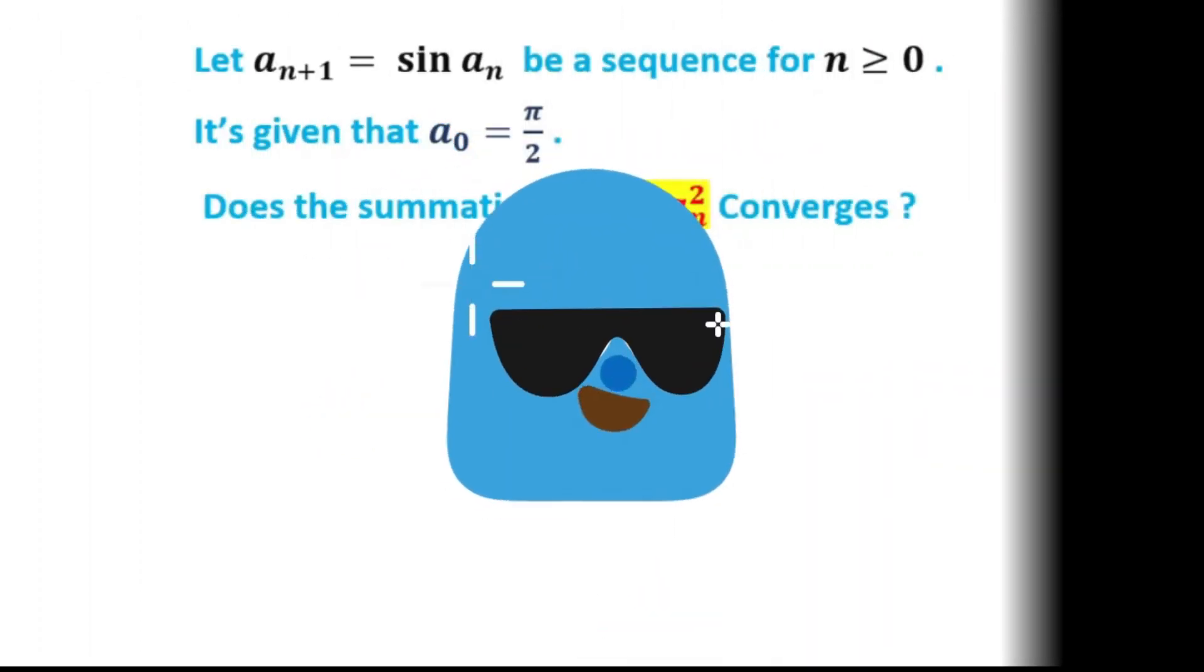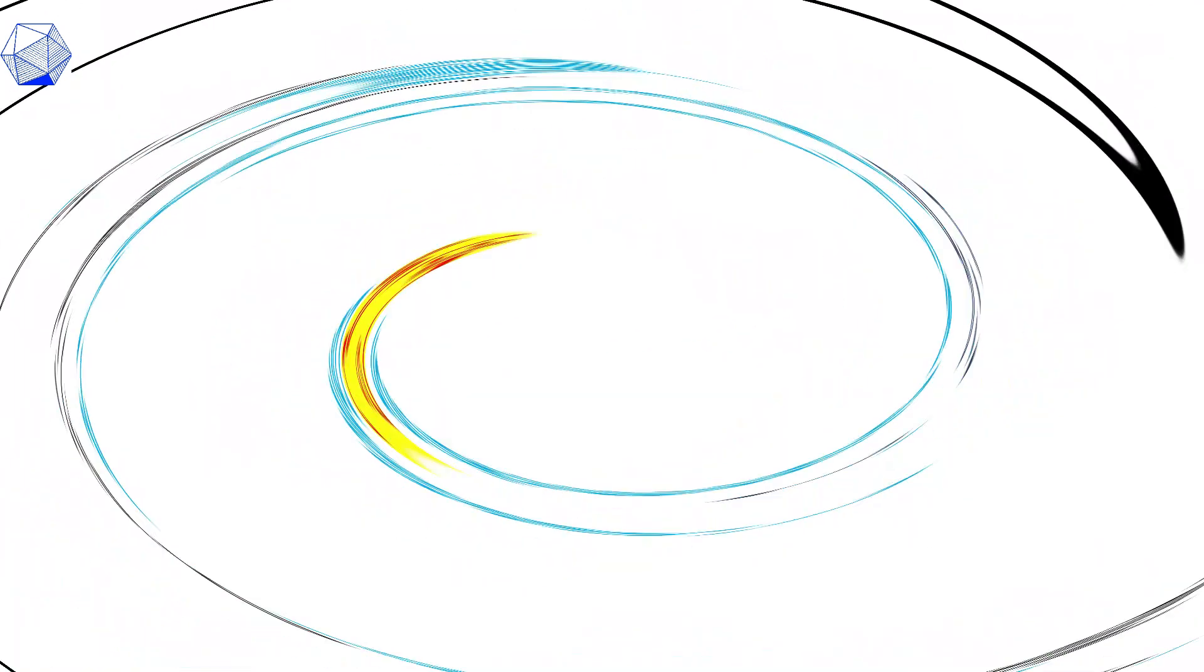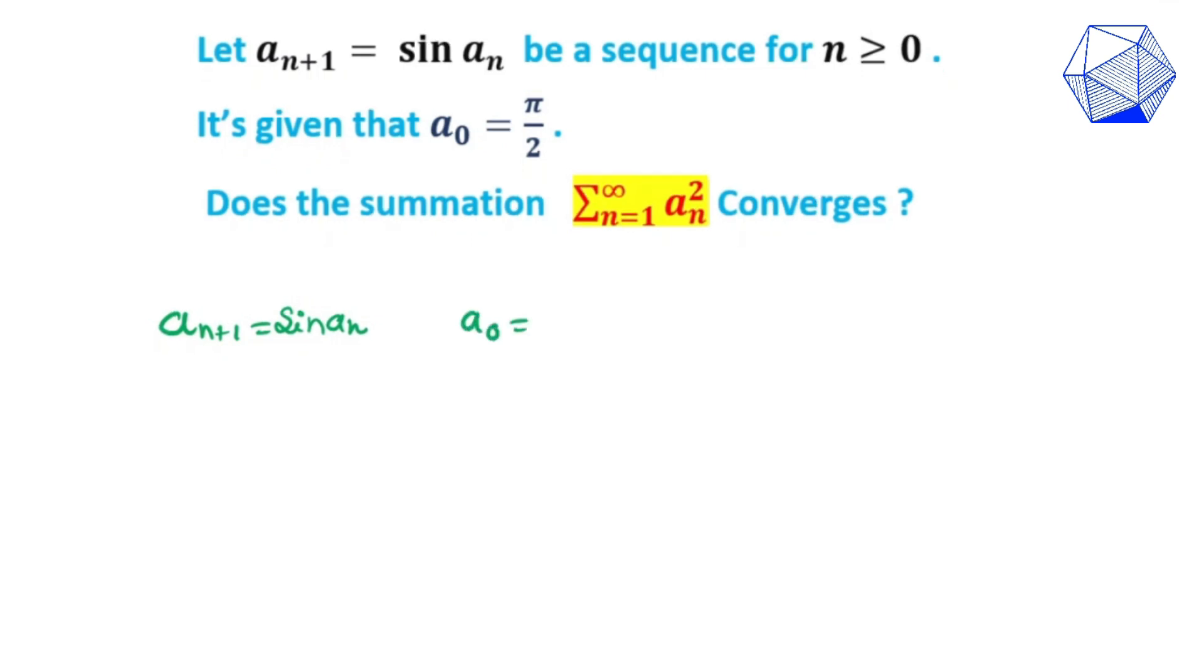We are back with a Putnam problem, this is A3 from Putnam 2020. The problem says that a_{n+1} = sin(a_n) and it's given that a_0 = π/2. So we have to find out whether this sequence converges or not.